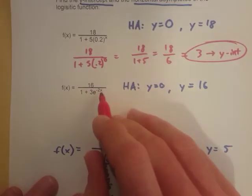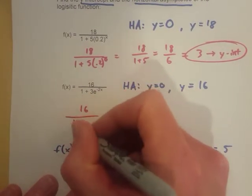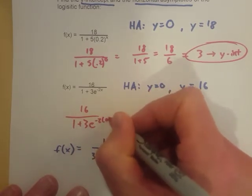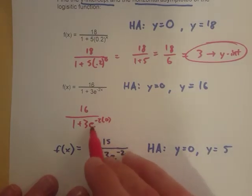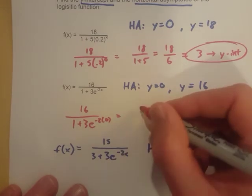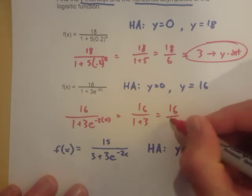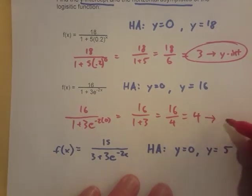Same kind of thing happens with these other ones. This next one down here, we put a 0 in for that x. We have 16 over 1 plus 3 times e to the negative 2 times 0. Well, anything times 0 is 0, so that whole thing is 0. e to the 0 is 1. And so then this turns into 16 over 1 plus 3, which is 16 over 4, which is 4. And that's going to be our y-intercept for this one.